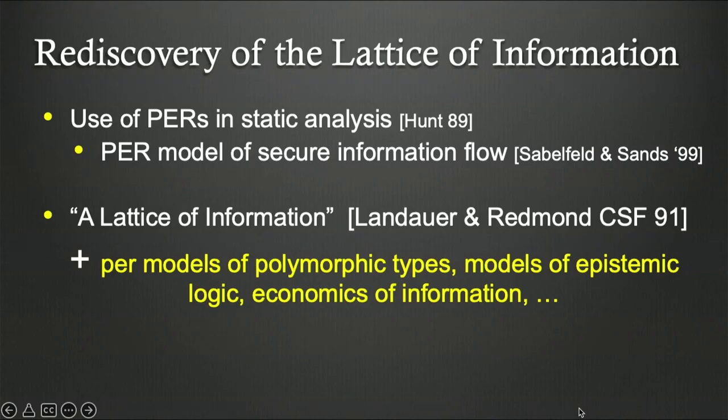And when we think in terms of equivalence relations, we think of them as sets of pairs of the related things in the relation. So, this is a structure that actually is quite well-known. It's just not well-known as linked to Shannon's early paper. It's something that has been rediscovered in a number of contexts. And I name, in particular, ones that inspired the line of work that we're working on that go back to Sebastian's PhD thesis, in fact, on using partial equivalence relations for static analysis. But similar ideas arise completely independently elsewhere. For example, a paper by Lando and Redmond at CSF in 91, using an almost identical title to Shannon's, namely, A Lattice of Information. And similar ideas can be seen in earlier literature on, for example, models of polymorphic types, because parametric polymorphism is intimately linked to information flow properties. Models of epistemic logic, even in game-theoretic analyses of economics and economics of information.